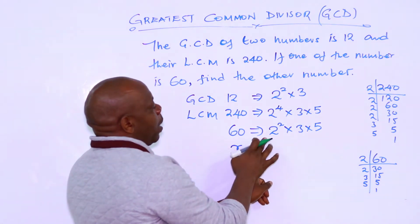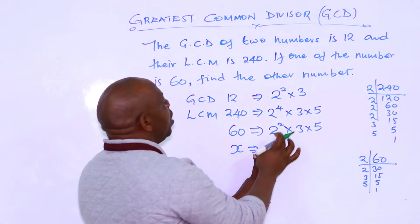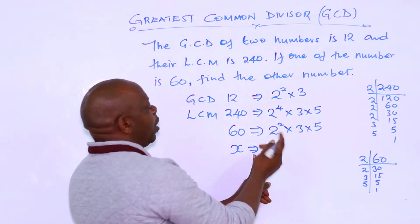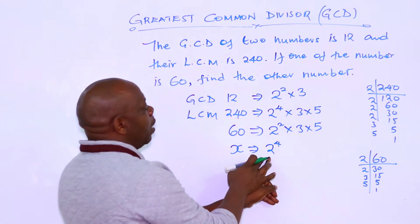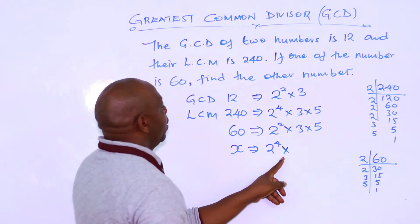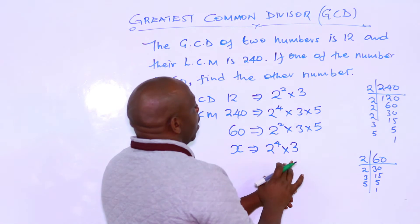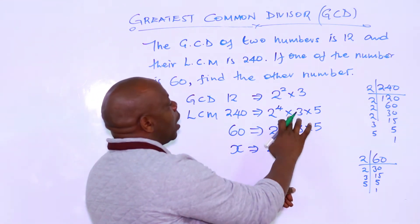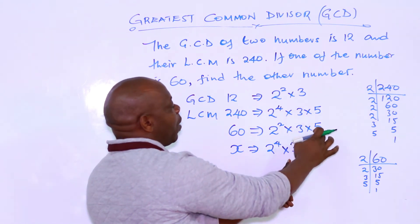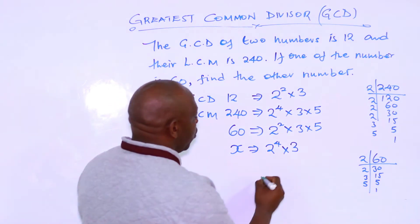Every number must share the GCD. In our first term, which is 60, we have 2 to the power 2, which is in the GCD. But the LCM has 2 to the power 4, not taken care of by the first number — so X must supply 2 to the power 4. In the GCD we have 3, in the LCM we have 3, and in the first number we have 3, so X must also have a 3. The 5 in the LCM is taken care of by 60. Therefore the least possible number X is 2 to the power 4 times 3, which is equal to 48.